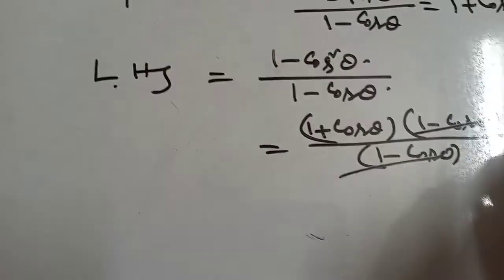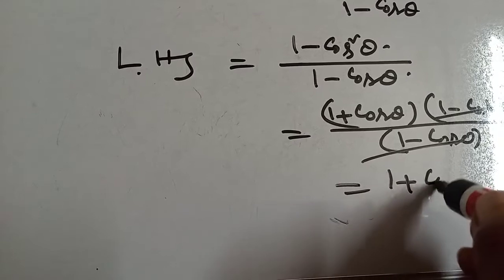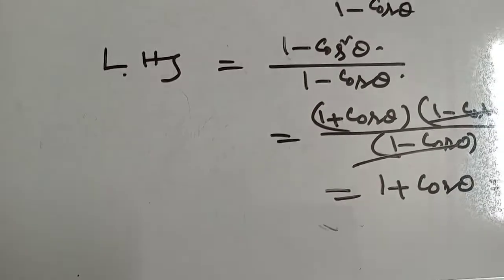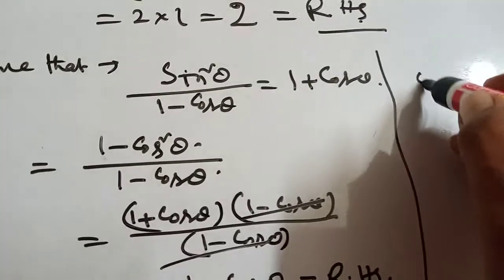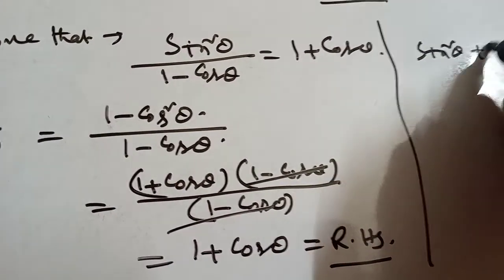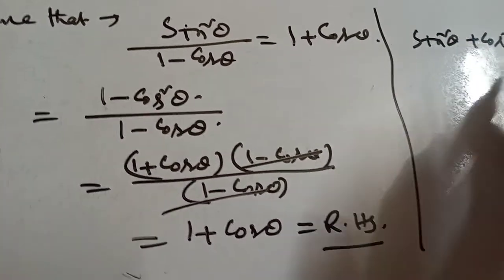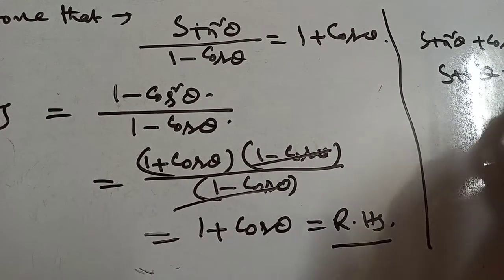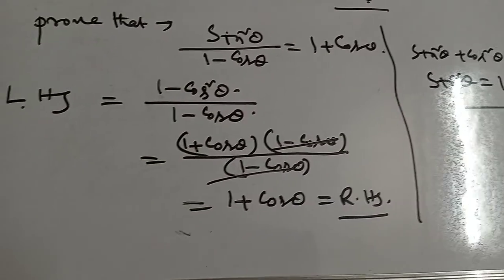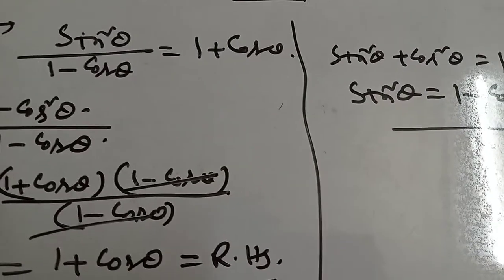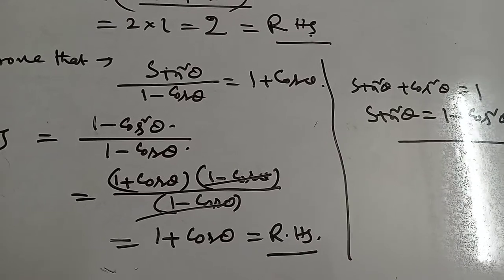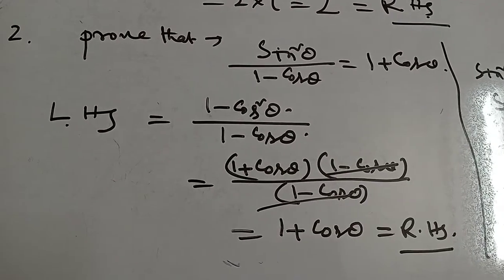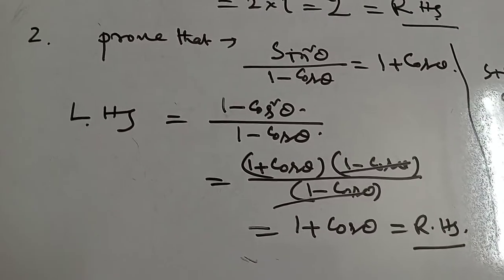The 1 minus cos theta cancels, and we get 1 plus cos theta — that is the right hand side. To recap: we replaced sin squared theta with 1 minus cos squared theta because sin squared theta plus cos squared theta equals 1, then 1 minus cos squared theta over 1 minus cos theta simplifies to 1 plus cos theta. This is the answer.